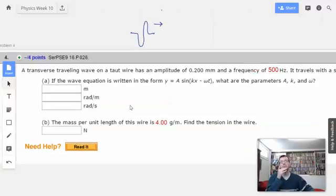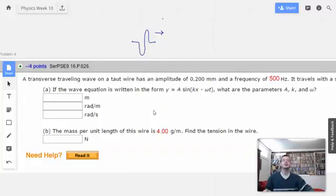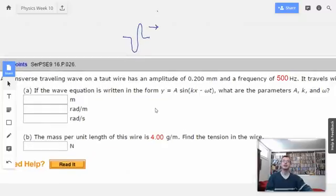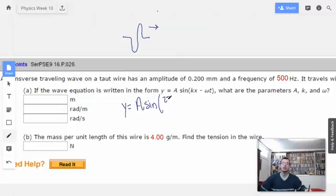First thing I'm going to do is write it in my preferred form, in my happy place so to speak. Normally plus, and then I'll put in the plus phase angle, which in this case is going to be zero.